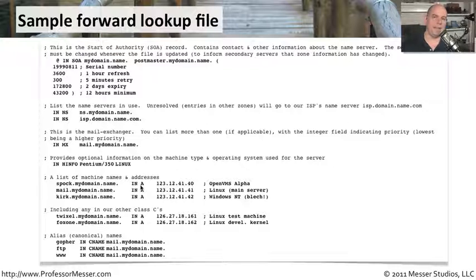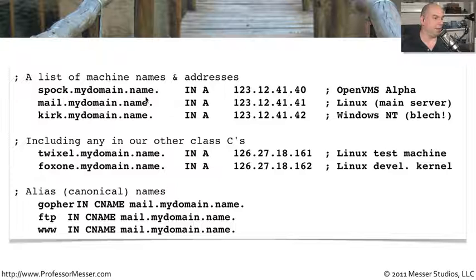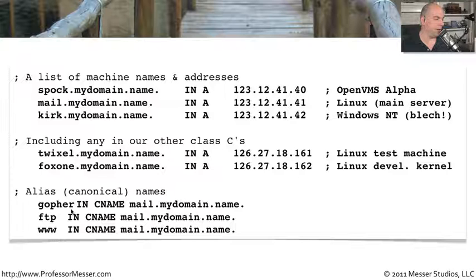Even without any knowledge about them, just looking at these records, we can almost decipher them at first glance. You can see a list of names and addresses. spock.mydomain.name is an A record, and here's an IP address. So we can almost assume that it links together names and addresses. And you can see others down here that are aliases or canonical names — one way to specify alias names of different servers right in the DNS itself.